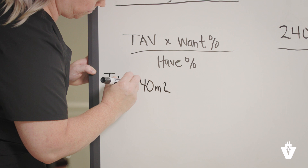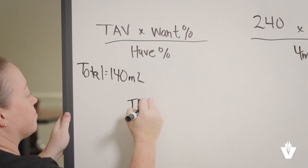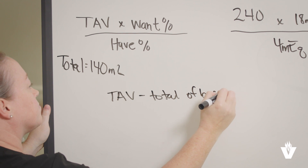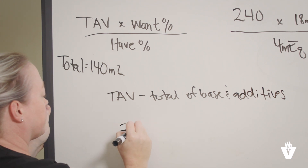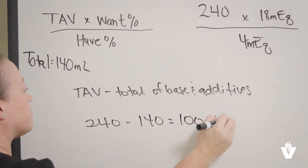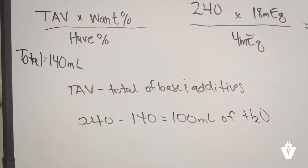Once you have the rounded answers, you will need to calculate the total. With this calculation, you will see your total volume is only 140 milliliters with the bases and additives. A TPN is also meant to have sterile water added for hydration, and this is how you calculate the total amount of water required: total actual volume minus the total amount of bases and additives together. For this order, 240 milliliters minus 140 milliliters equals 100 milliliters of water, which will be added to the TPN bag to give the total actual volume of 240 milliliters.